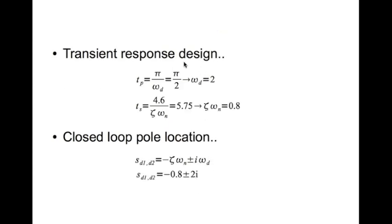Looking at the transient response: peak time equal to pi/2 seconds implies the damped natural frequency omega_d equals 2, and settling time equal to 5.75 seconds implies zeta*omega_n equals 0.8. The closed loop pole location for a second order system is minus zeta*omega_n plus or minus i*omega_d.